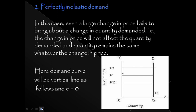The second type is perfectly inelastic demand. Here, even when the price changes — whether very low or very high, from P1 to P2 — the quantity demanded shows no change at all. So that means perfectly inelastic demand, and the demand curve is vertical.